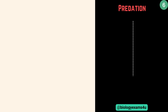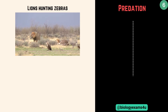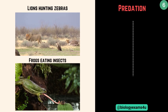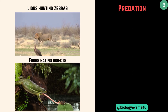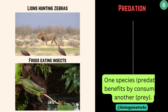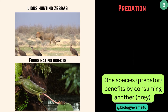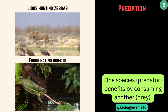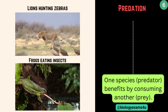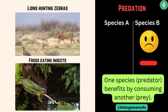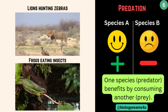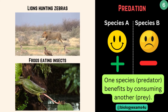Next interaction is predation. Lions hunting zebras, frogs eating insects — these are all predation. In predation, one species, the predator, benefits by consuming another, the prey. Here lion is the predator and zebra is the prey. So species A is benefited, whereas species B is negatively affected or gets killed.